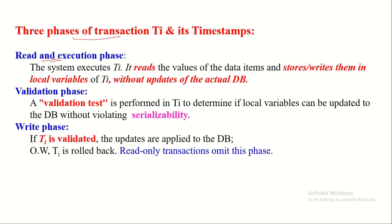When all read and execution operations are performed on the data items, the transaction enters the validation phase. During this phase, a validation test is performed to determine if local variables can be updated to the database without violating serializability. If the transaction succeeds in the validation test, it is permitted to enter the write phase and make updates to the actual database. If the transaction fails the validation test, it is rolled back in the validation phase and is not permitted to enter the write phase. The write phase is also not applicable to read-only transactions — read-only transactions omit this phase.